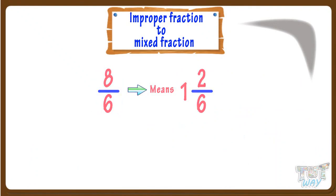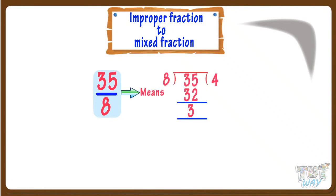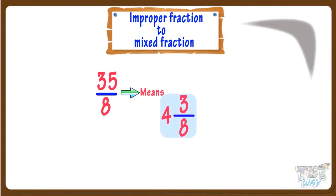Let's see another example. Here is another improper fraction: 35 by 8, which implies dividing 35 objects among 8 persons. If we divide 35 by 8, we get 4 as quotient, which means each person will get 4 whole objects. And the remaining 3 objects will again have to be divided among 8 persons, so we write it as 4 and 3 by 8. So 35 by 8 as a mixed fraction is 4 and 3 by 8.